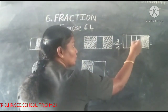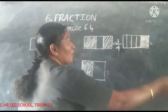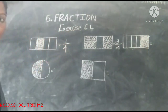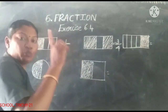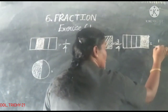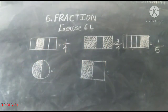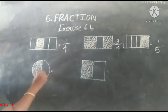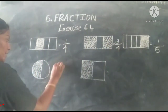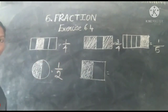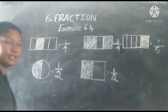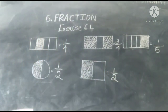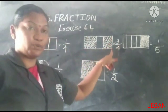Next one — one, two, three, four, five. Totally five parts, one part is shaded — one-fifth. Next is half: half the portions are shaded, so one-half. Here also half the portion is shaded — one-half.